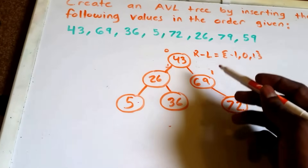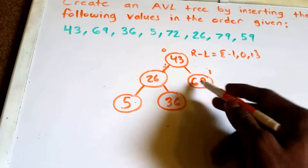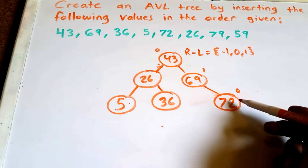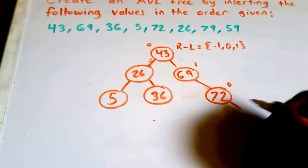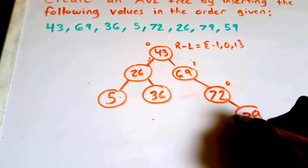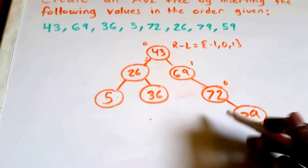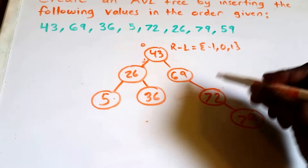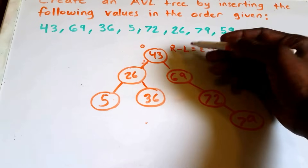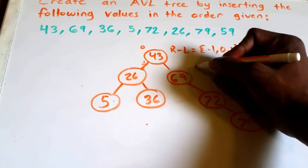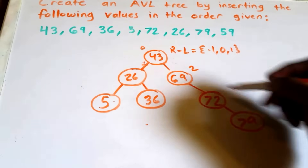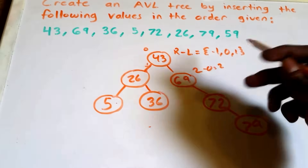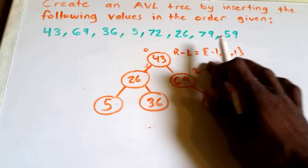Next we're going to insert the value 79. Since 79 is greater than 43, we go right. Since 79 is greater than 69, we go right. Since 79 is greater than 72, we go right again and insert 79. Now we have another problem: the balance factor for this subtree is the right side 2 minus 0, which equals 2 — not -1, 0, or 1. So we need to fix this.